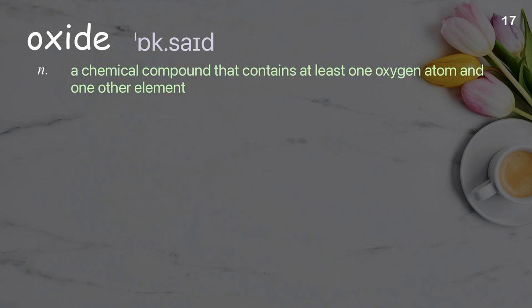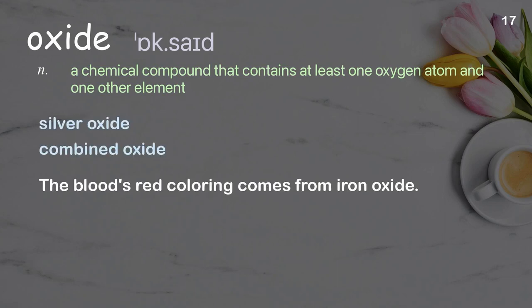Oxide. A chemical compound that contains at least one oxygen atom and one other element. Examples: silver oxide, combined oxide. The blood's red coloring comes from iron oxide.